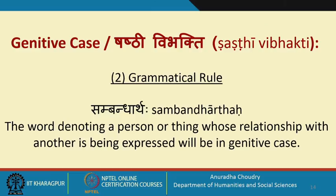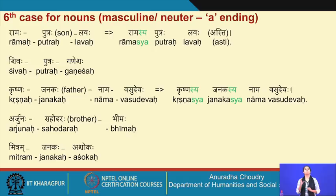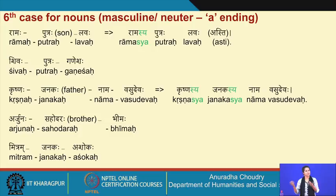The second grammatical rule is that the sixth case also denotes a person or thing whose relationship with another is being expressed. For example: raamaha, putraha, lavaha — Lava is the son of Rama. Using the genitive it becomes: raamaha putraha lavaha asti — the asti is optional. Try: shivaha putraha ganeshah — it becomes shivasya putraha Ganeshah.